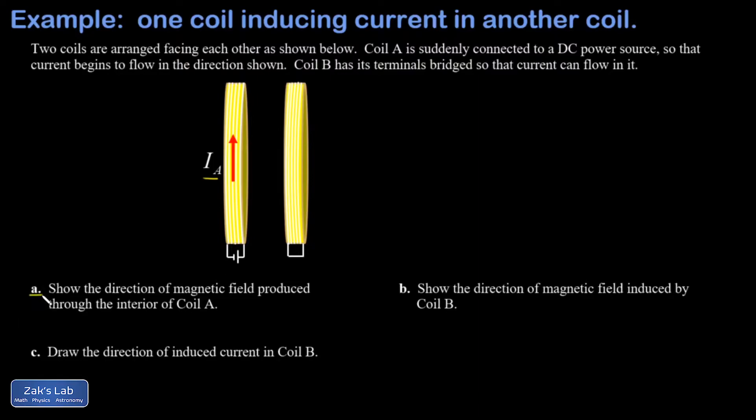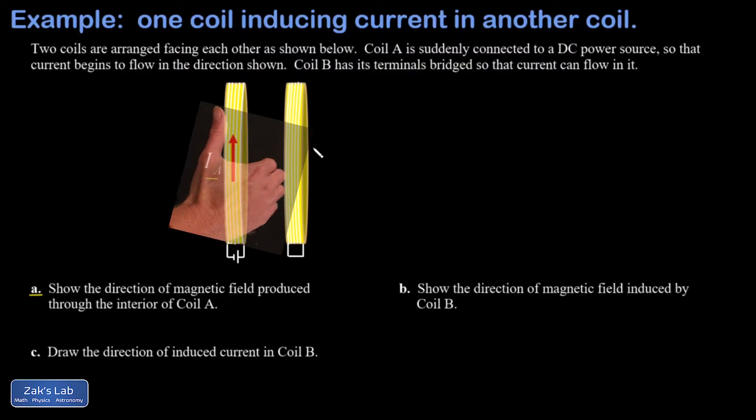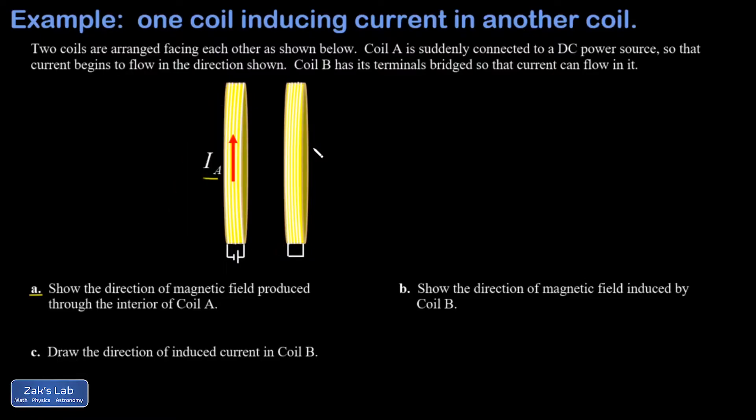And then the rest of the questions concern what is induced in the second coil. We'll get to those in just a moment. So we apply the Ampere's law right-hand rule: put our thumb in the direction of current, our fingers of our right hand loop around through the coil in the direction of the magnetic field.